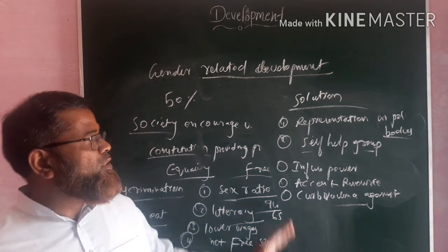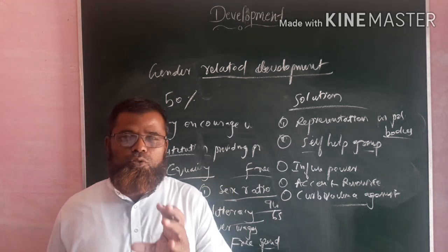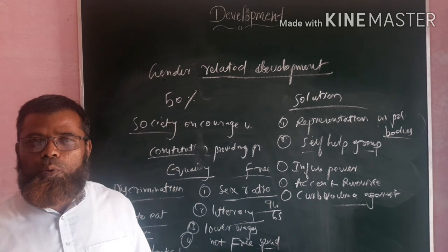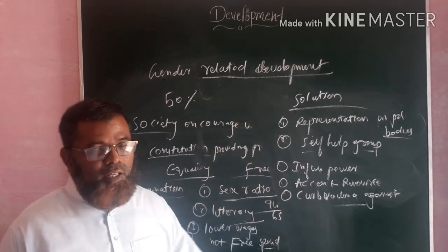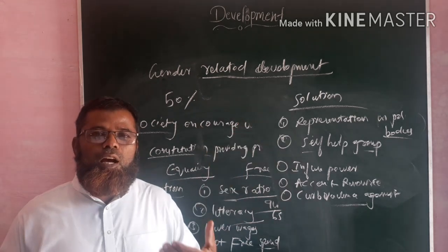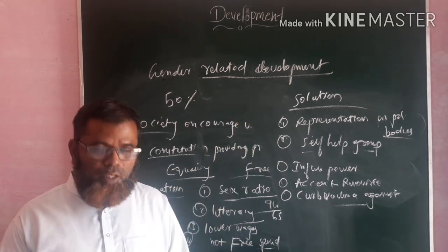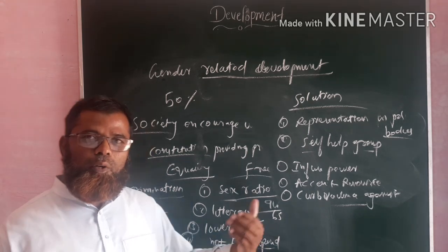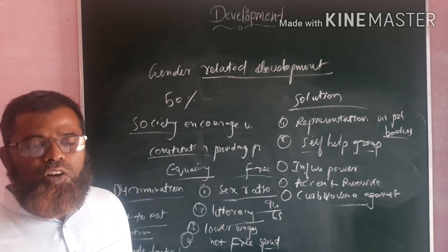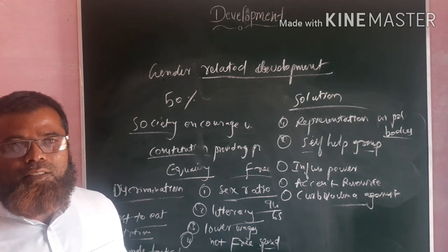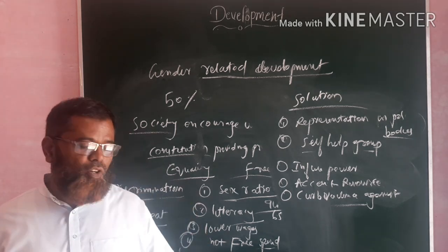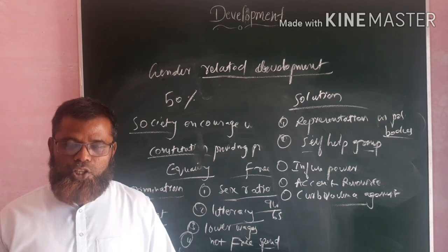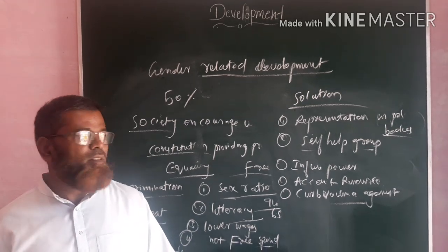Women are also given access to and control over various types of resources. Steps are taken to curb violence against women — whether in the home or at working places — by the government and various organizations to prevent this kind of discrimination. This is the last concept of this chapter. For any doubts, you can comment, and subscribe for more videos.